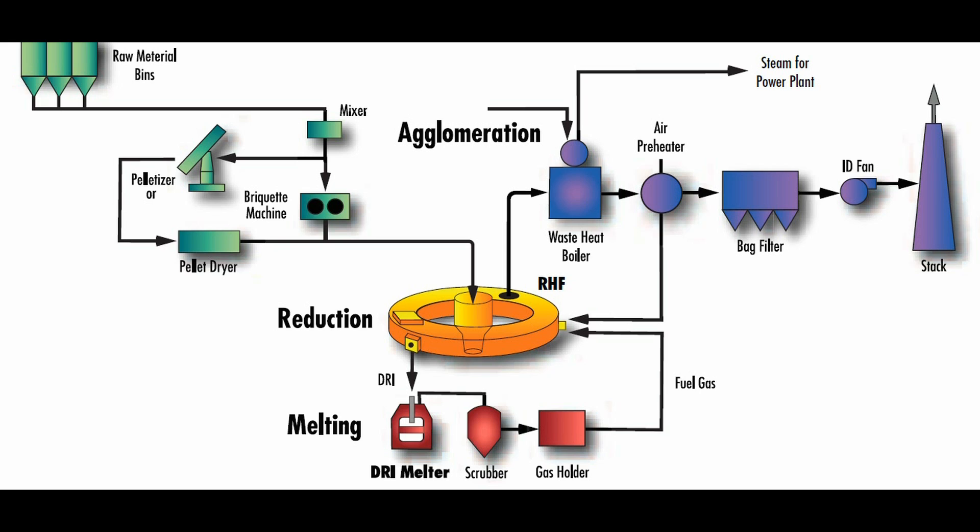After reduction, the direct-reduced iron pellets or briquettes are discharged hot into the melter.